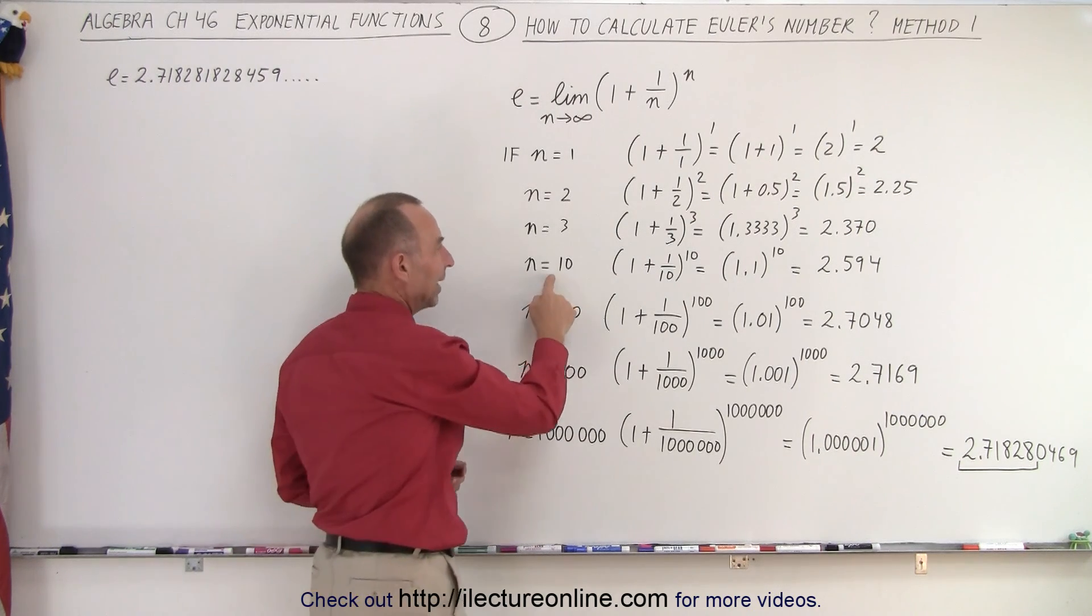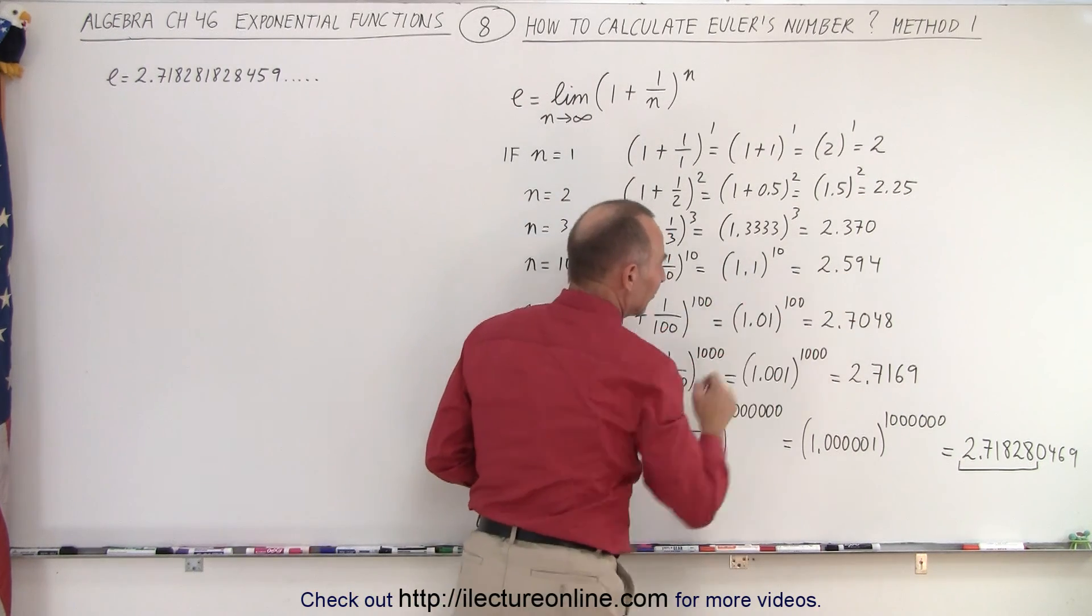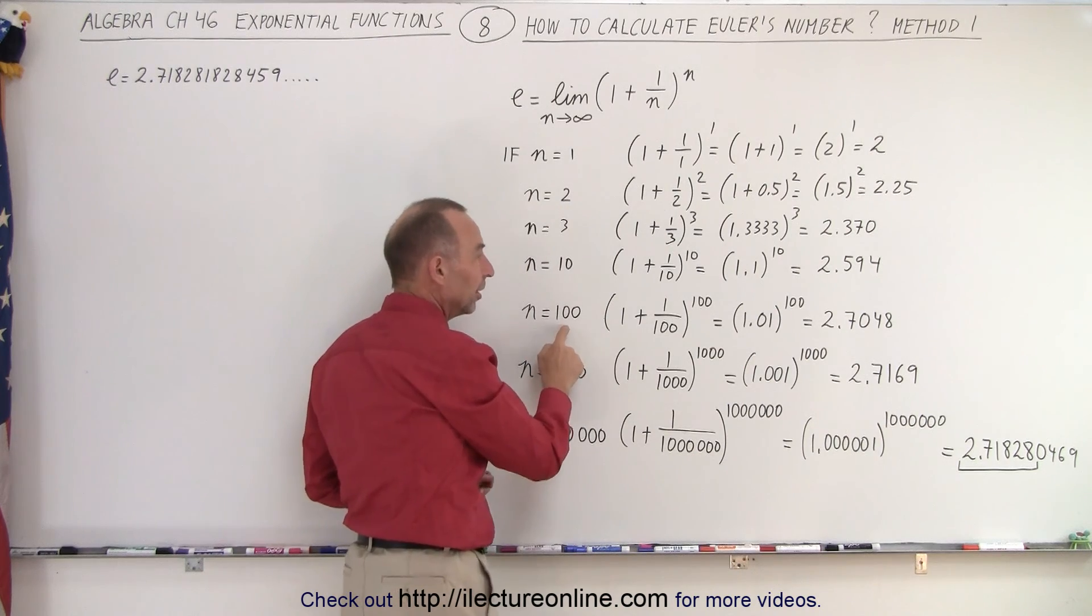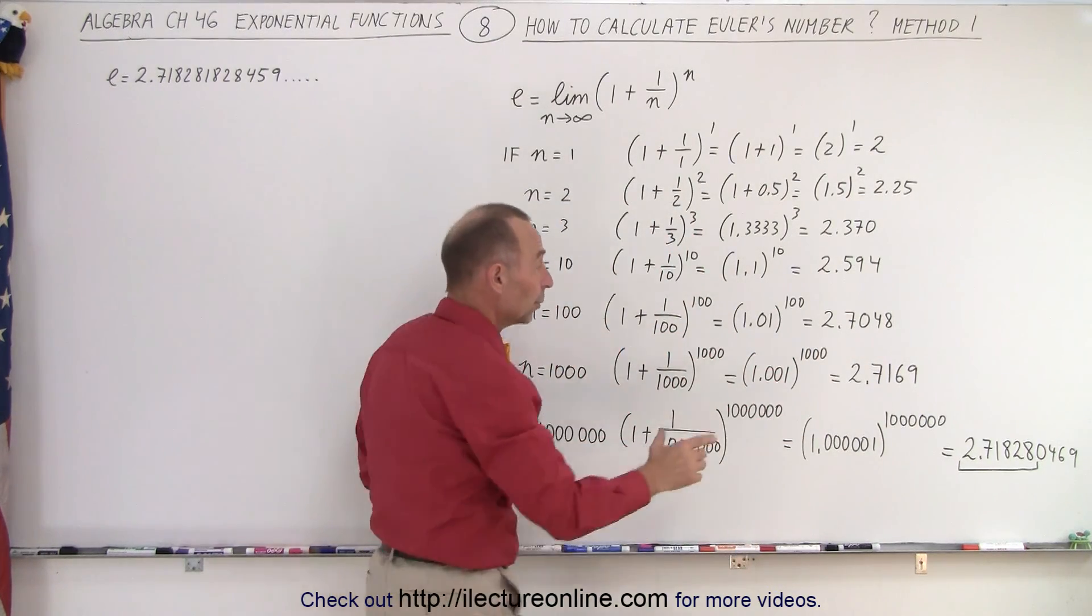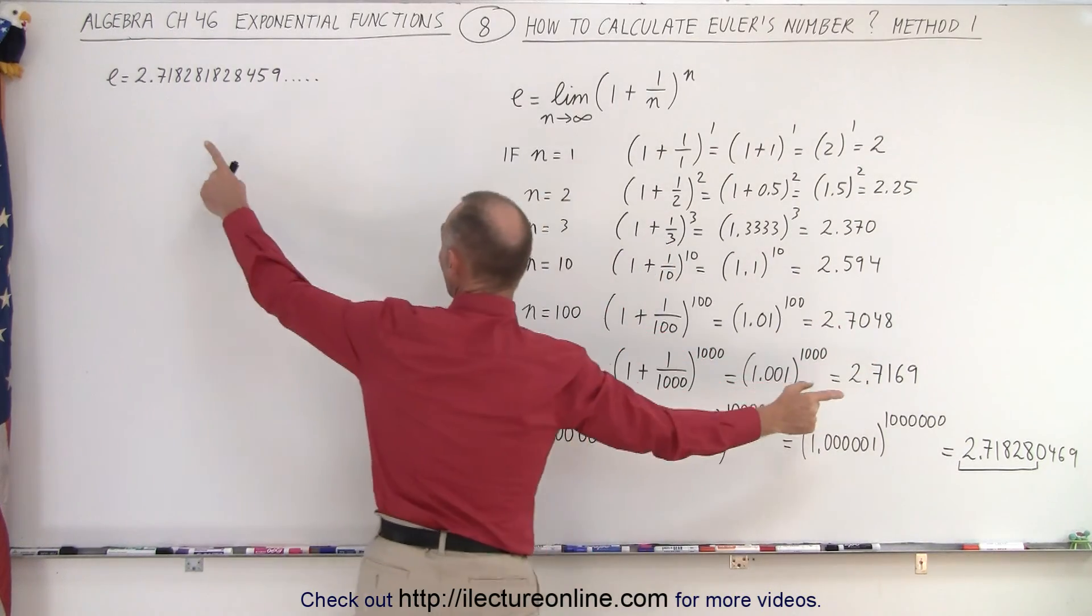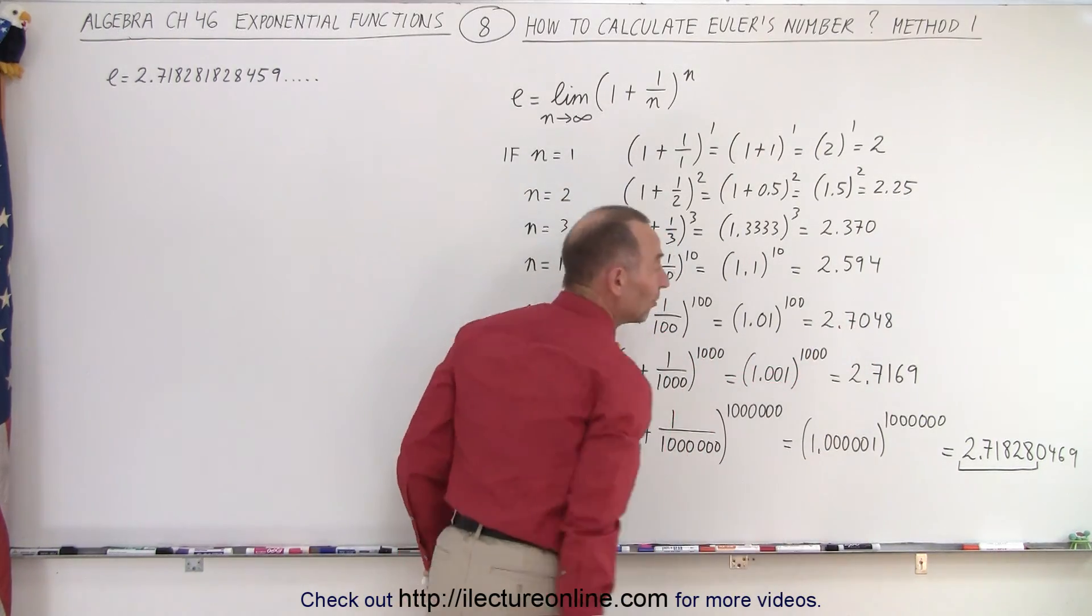When n equals 10, we get 2.594. When n equals 100, now we get 2.7048. Now you begin to see that we're getting relatively close to the true value. To one decimal place, it's already correct.